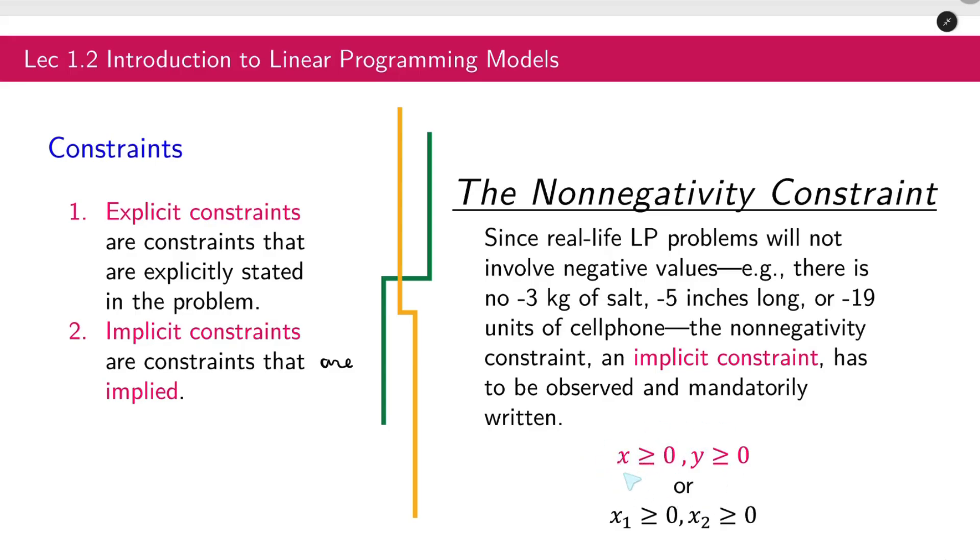If we have decision variables x and y, this is the corresponding non-negativity constraint: x is greater than or equal to 0, or y is greater than or equal to 0. Take note that it can be zero, yes, for our decision variables. Or if we only have x, we have subscripts x1 and x2.